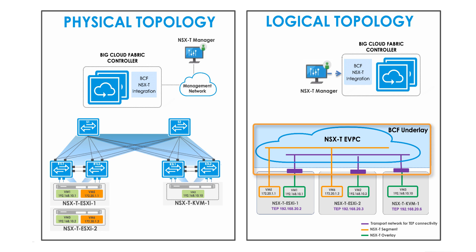VM5 and VM6 shown here are attached to an NSX-T segment, which is a VLAN-based logical switch. Corresponding segments in the NSX-T eVPC on BCF will be auto-created to provide the connectivity for these VMs.